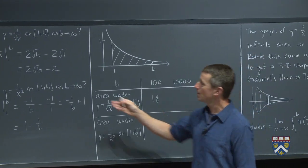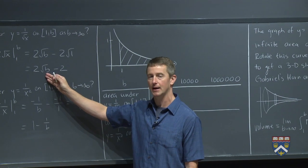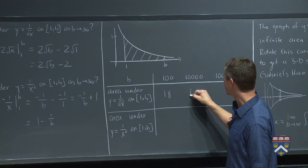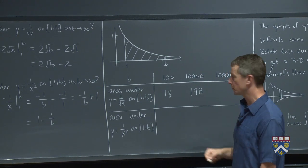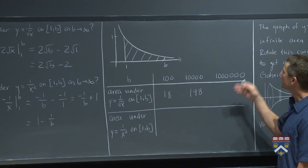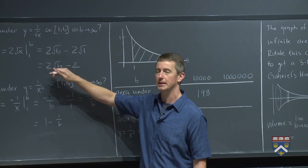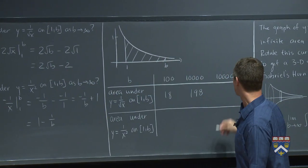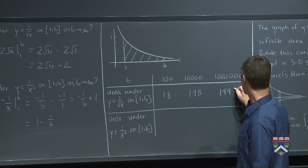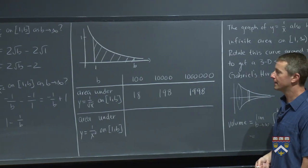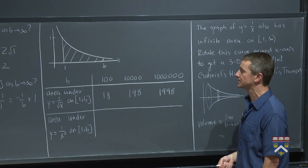If we plug in 10,000, when I take the square root of 10,000, I get 100. So that's 200 minus 2. So now we've got 198 units of area. So we got a lot more area there. And if we plug in a million, the square root of a million is 1,000. So we get 2 times 1,000 minus 2, which is 1998. So in this case, as b goes to infinity, the area does go to infinity, as you might have guessed.